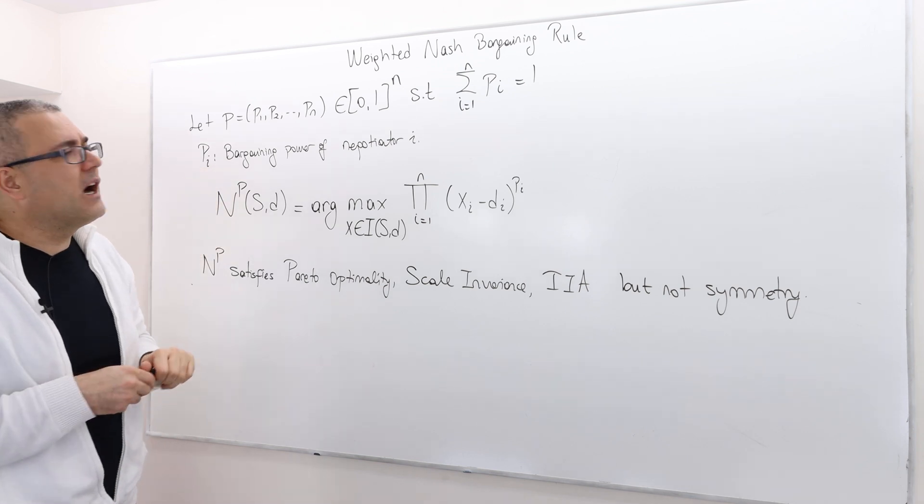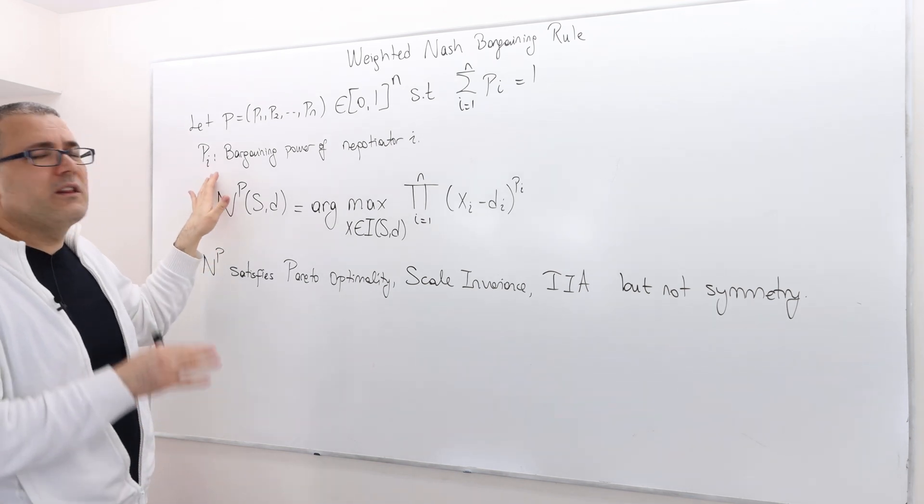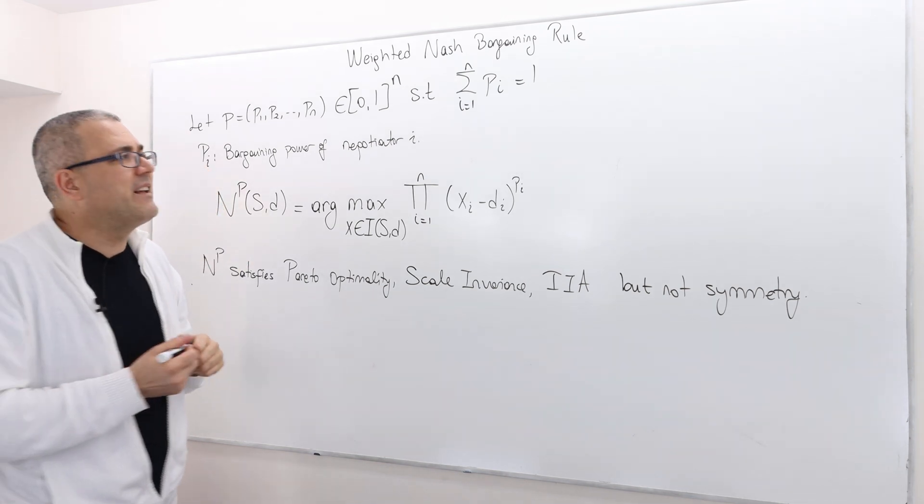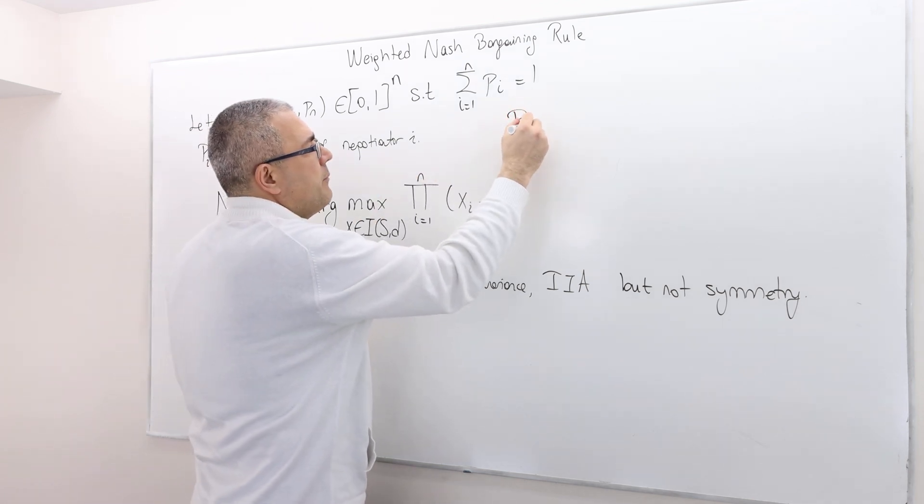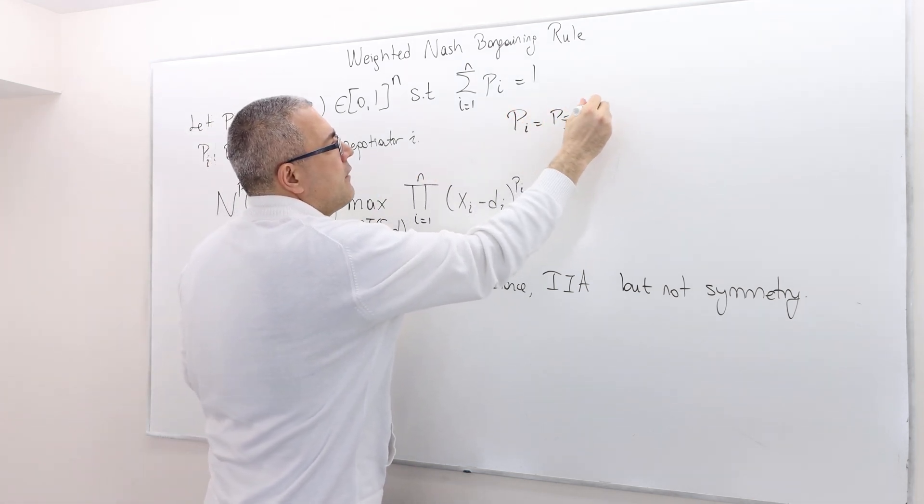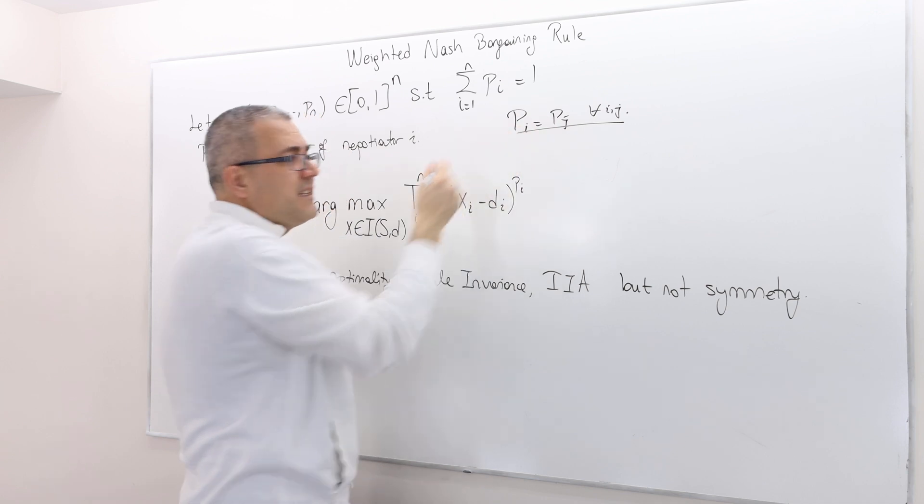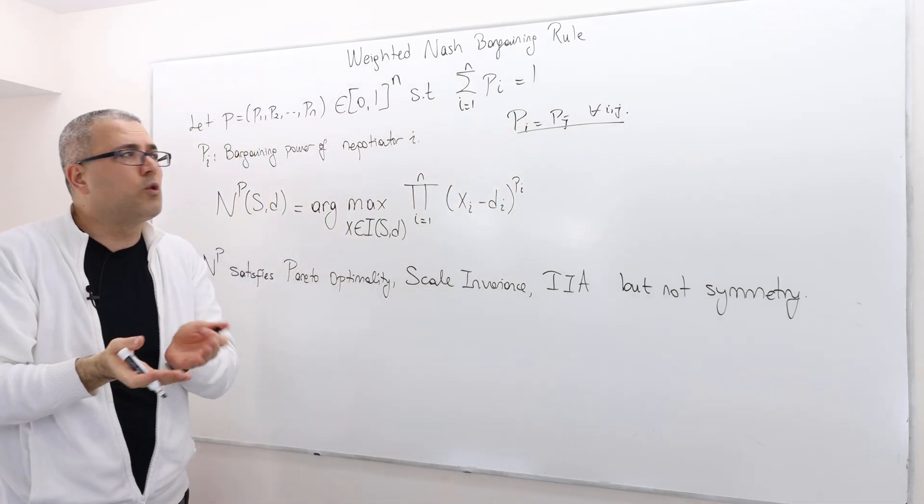If, for example, all the players, all the negotiators have exactly the same P-I, meaning P-I equals P-J for every I-J, well, this is standard Nash bargaining rule.